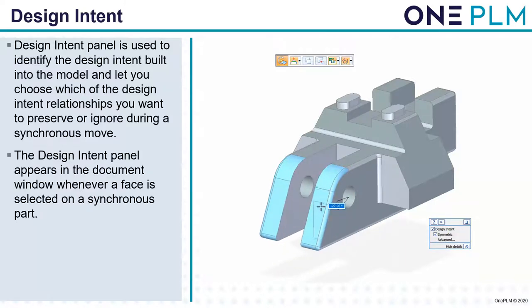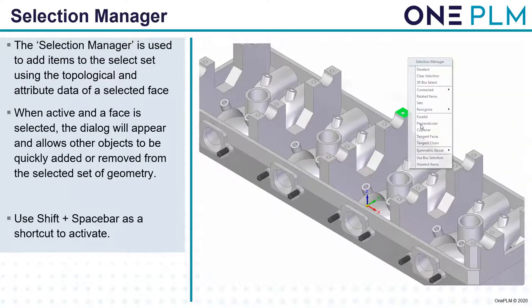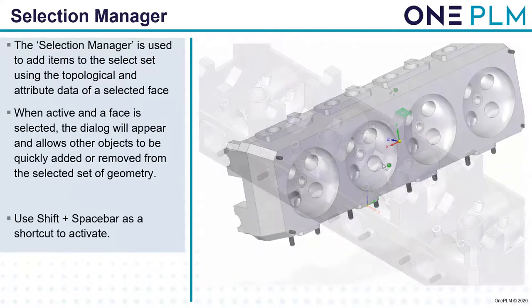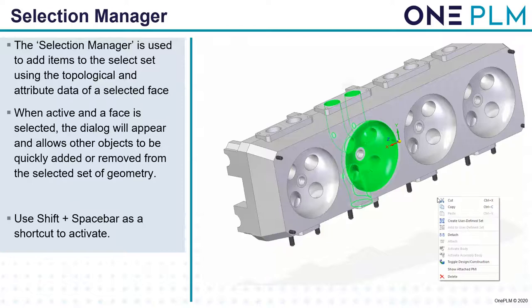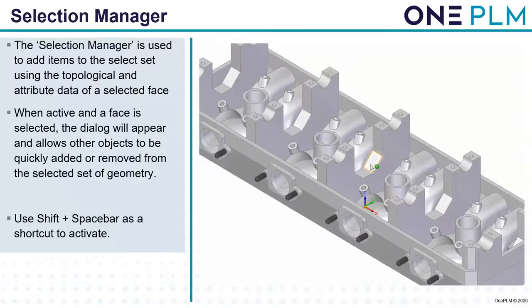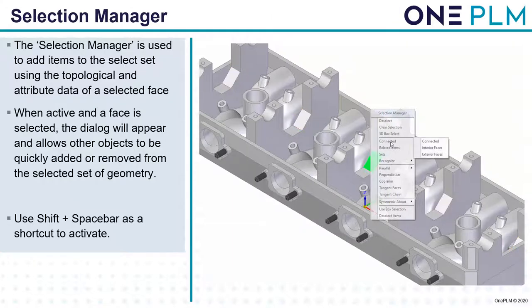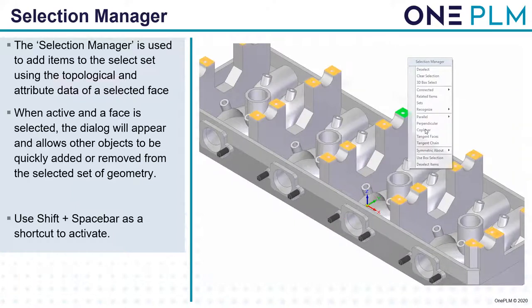Selection manager is used to add items to the select set using the topological attribute data of a selected face. When active and a face is selected, a dialog box appears allowing other objects to be quickly added or removed from the selected set. We can use Shift+Spacebar as a shortcut to activate. We can collect connected interior faces, recognize a feature as a rib or boss, or select coplanar faces. Selecting coplanar will show all faces on that part that are coplanar.